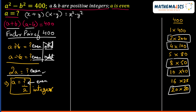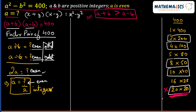Since a and b are positive integers, a+b must be greater than a-b. Looking at the pair 20 and 20, both factors are equal, so one cannot be a+b and the other a-b with positive b. This pair is eliminated.